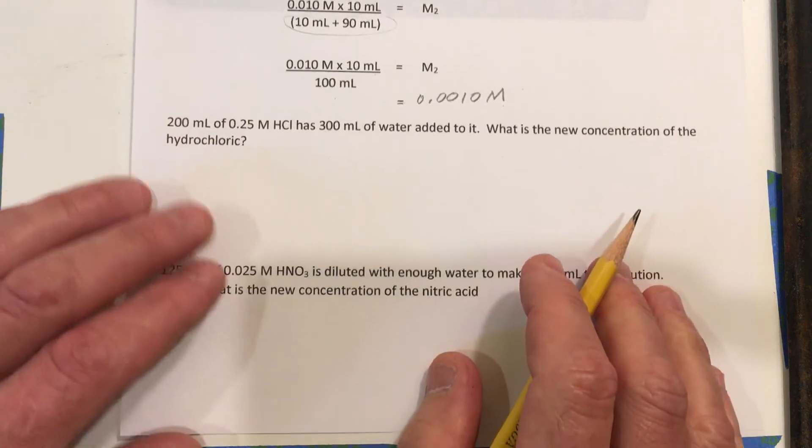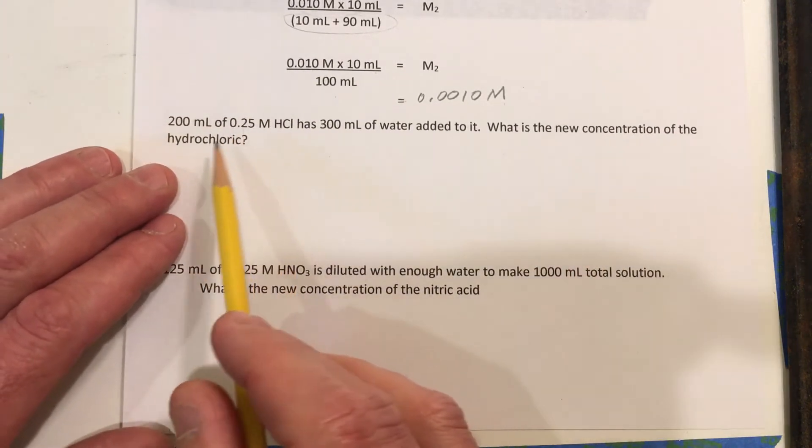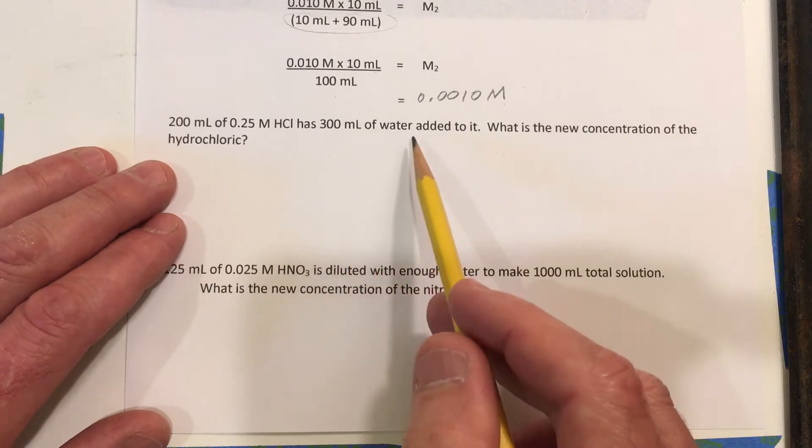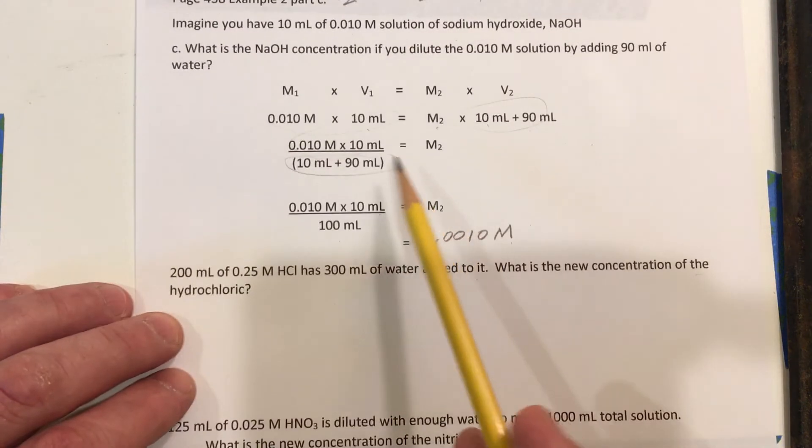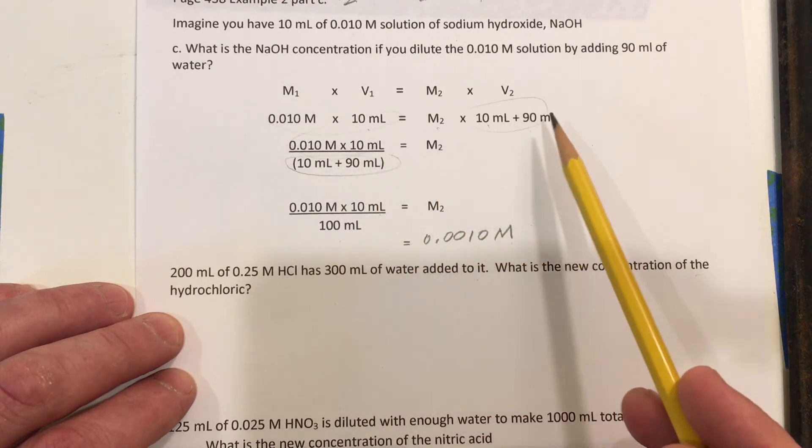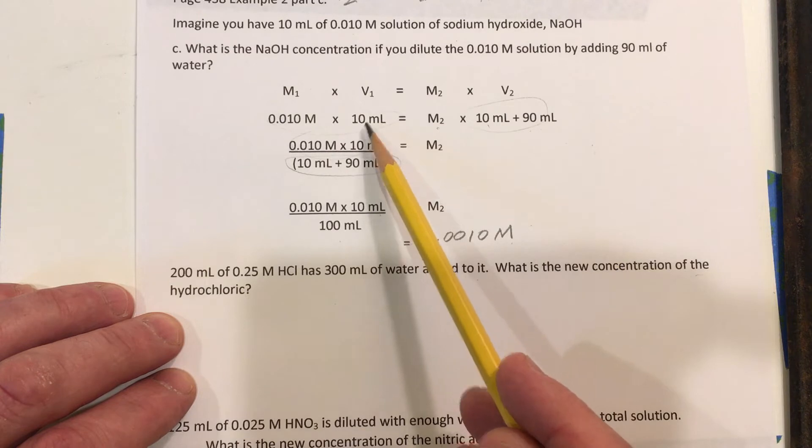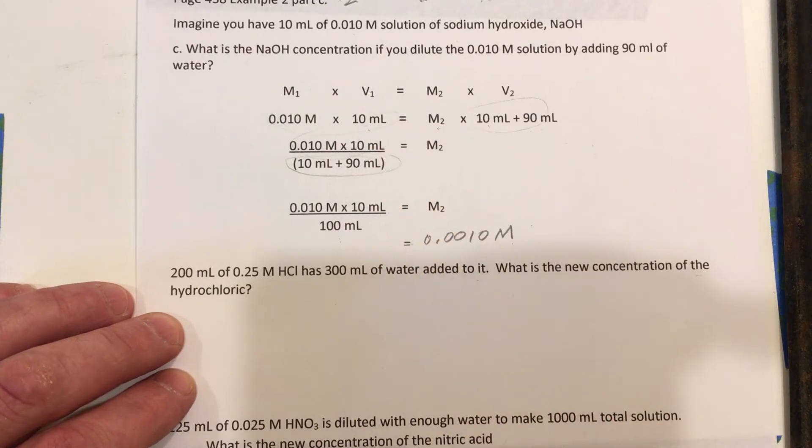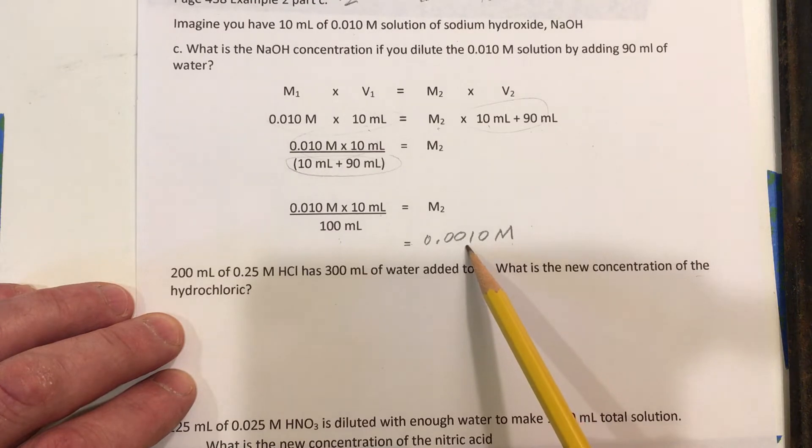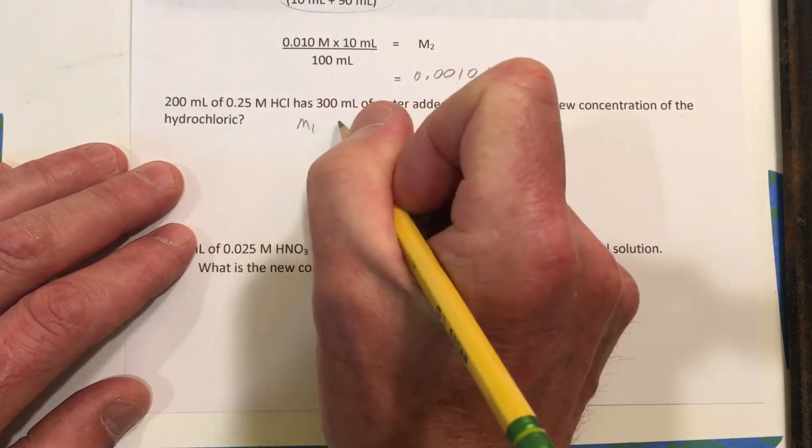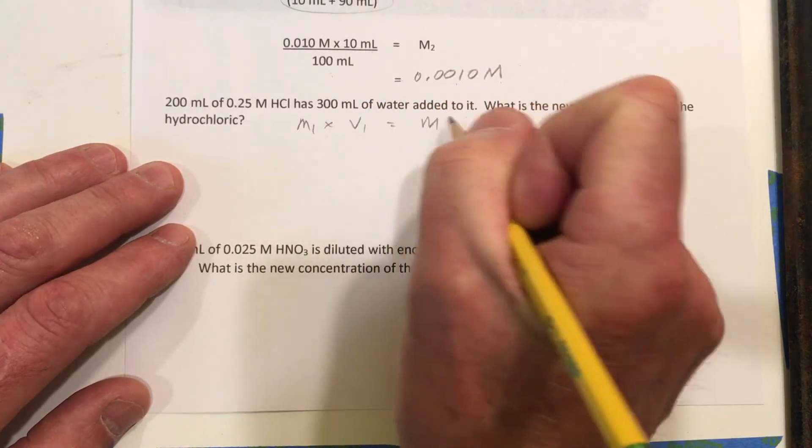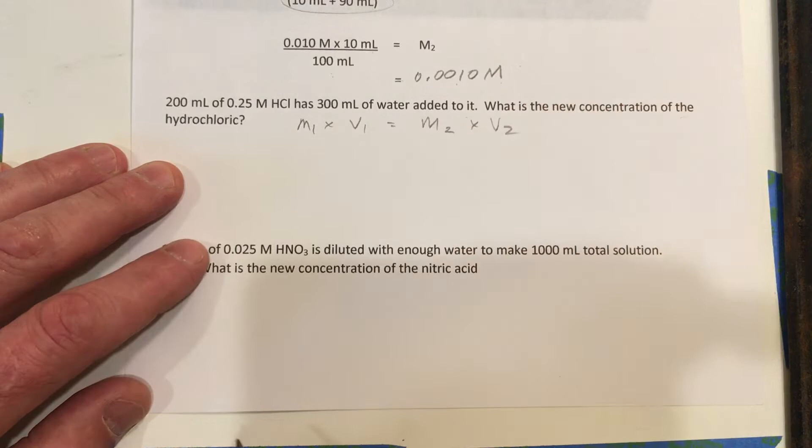Let's take a look at another one here. 200 milliliters of 0.25 molar hydrochloric acid has 300 milliliters of water added to it. What's the new concentration of hydrochloric acid? This one's a little harder to see. Here we could easily see that the volume was 10 times larger from 10 to 100. So the molarity should have been 10 times smaller, which it was. This is one-tenth of this number up here. But that's a little hard to do in our heads here. So this one, I'll go ahead and use our M1V1 equals M2V2. And now I'll just plug in the numbers.